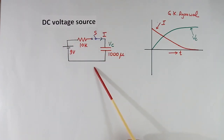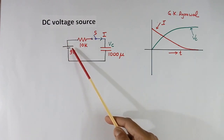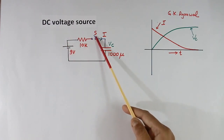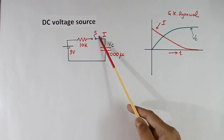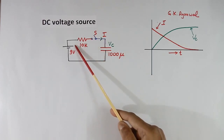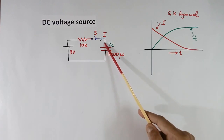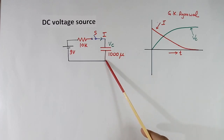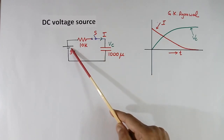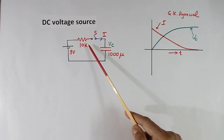Here I have shown one simple circuit: a DC voltage source, one resistance of 10K, a switch, and a capacitor of 1000 micro. When we close the switch, current will flow and this capacitor will charge. In the beginning, the capacitor behaves like a short. So when we close the switch, current flowing will be this voltage divided by this resistance — about 0.9 mA.